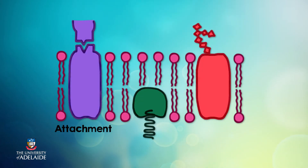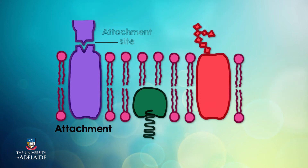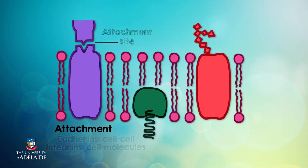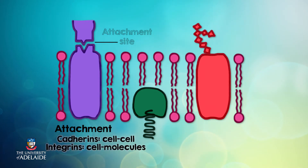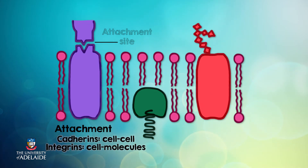Carrier proteins allow cells to attach to one another, or to extracellular molecules outside of the cell, or to intracellular proteins inside of the cell. The proteins that attach cells to each other are called cadherins. The proteins that attach cells to extracellular molecules are called integrins, and they usually exist in pairs in the plasma membrane.